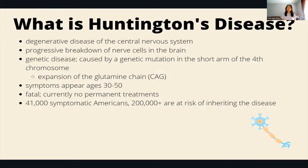Currently Huntington's is fatal and there are no permanent treatments. Its symptoms start to appear in the age range of 30 to 50, which means when people are in this age range they suddenly develop these Huntington's symptoms and then they die very quickly.